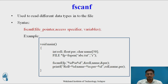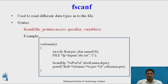fscanf is used for reading different data types from the file. For example, to read an integer, a string, and a float value: fscanf(fp, "%d %s %f", &roll_number, name, &percentage). This reads the values from the file and stores them in the variables roll_number, name, and percentage.